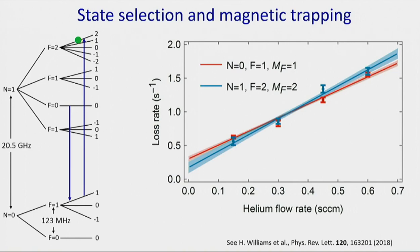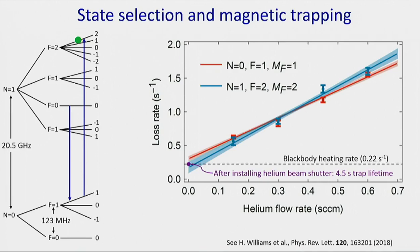Once we understood the loss was limited by the helium flow, we installed a helium shutter. After installing it, we get a trap lifetime of 4.5 seconds. Molecules can also be vibrationally excited by blackbody radiation — the calculated rate for blackbody radiation at room temperature is 0.22 per second, which is exactly the loss rate we're measuring. So the loss from the magnetic trap is dominated entirely by this blackbody heating process.